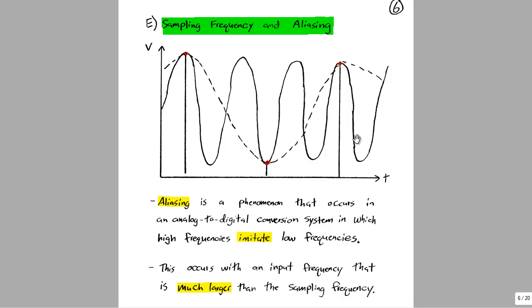For example, in this signal if we only take three samples, while there are one, two, three, four cycles of the input signal, we can trick the analog to digital converter into thinking this is a much lower frequency sine wave than it actually is.